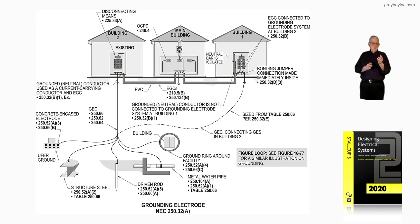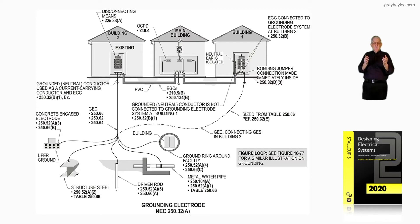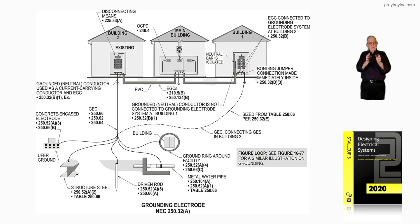If this was an existing building and you didn't have any of those listed, you could have a driven rod driven. You'd need to read 25 ohms or less per 250.53 — look at that exception, I believe it's exception two in there that deals with that. That covers the 25-ohm rule selection.